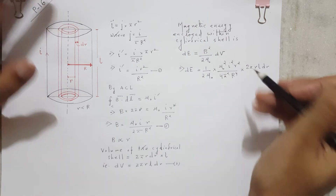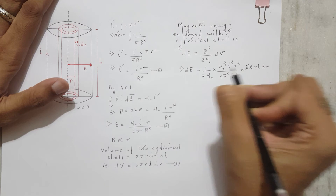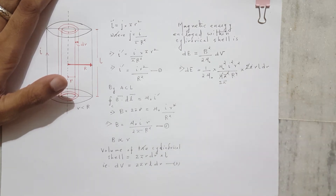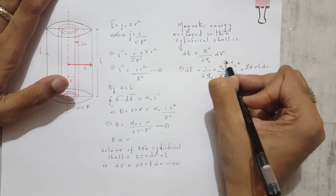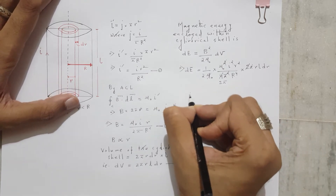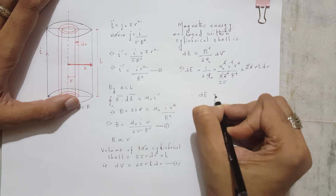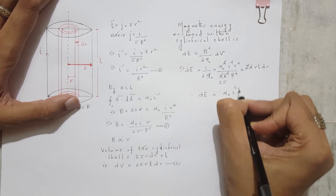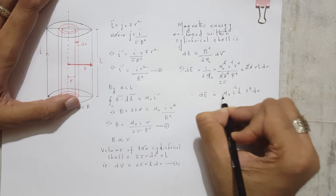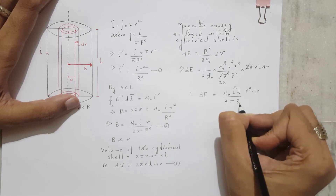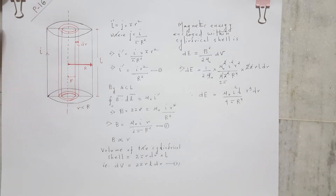We can do some cancellations: the 2π terms simplify and one μ₀ cancels. Therefore, dE = μ₀I²L·r³·dr / (4π·R⁴). I hope I have not missed out any term.